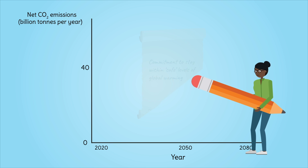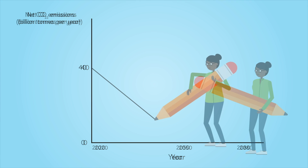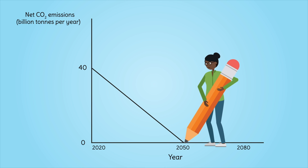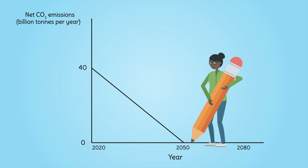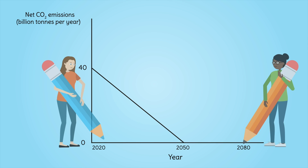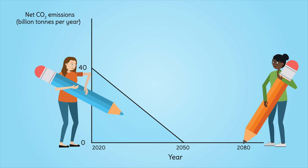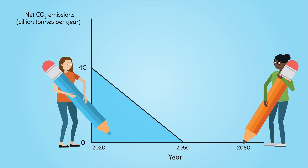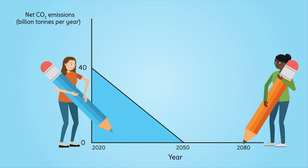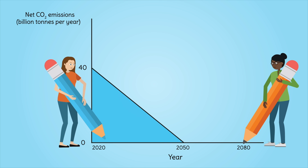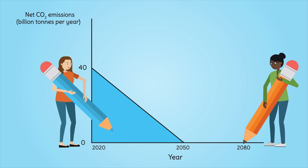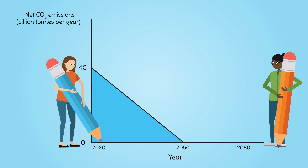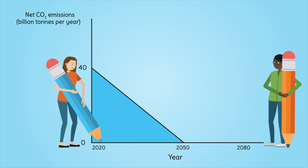As you know, the Paris Agreement committed us to limit warming to 1.5 degrees Celsius. To stay below 1.5 degrees of warming, we need to cut net CO2 emissions to zero by mid-century. But why net zero by 2050? How do we know this keeps us below 1.5 degrees of warming?